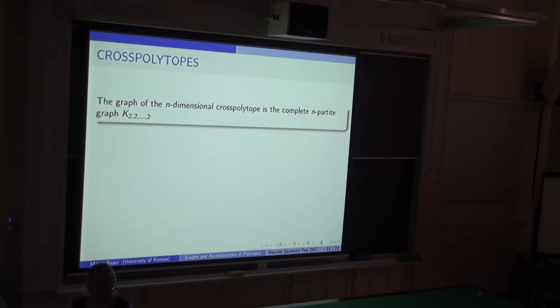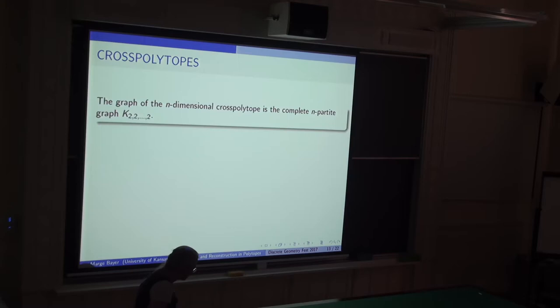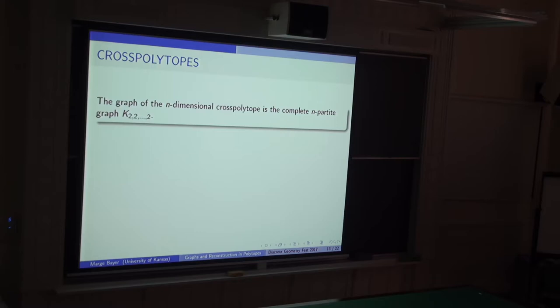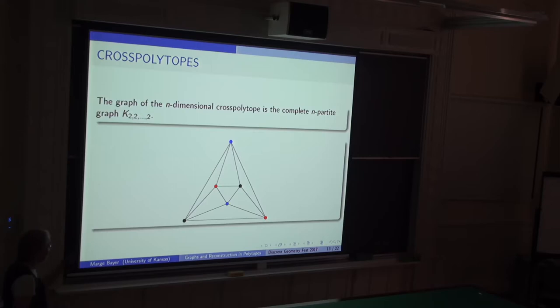Turning to a different topic: we've been looking at polytopes all of the same dimension. Now let's look at graphs or k-skeletons that represent polytopes of different dimensions. I'm going to look at the graph of the cross polytope in particular. The cross polytope is a generalization of the octahedron; its graph is the complete multipartite graph with two vertices in each part, so the antipodes are the only non-adjacent pairs.